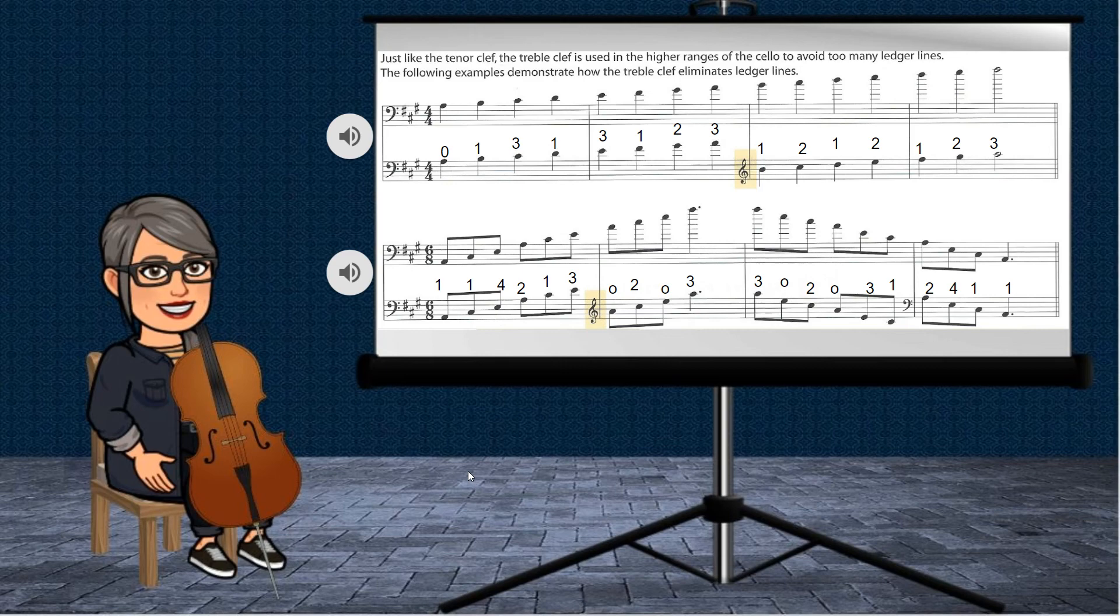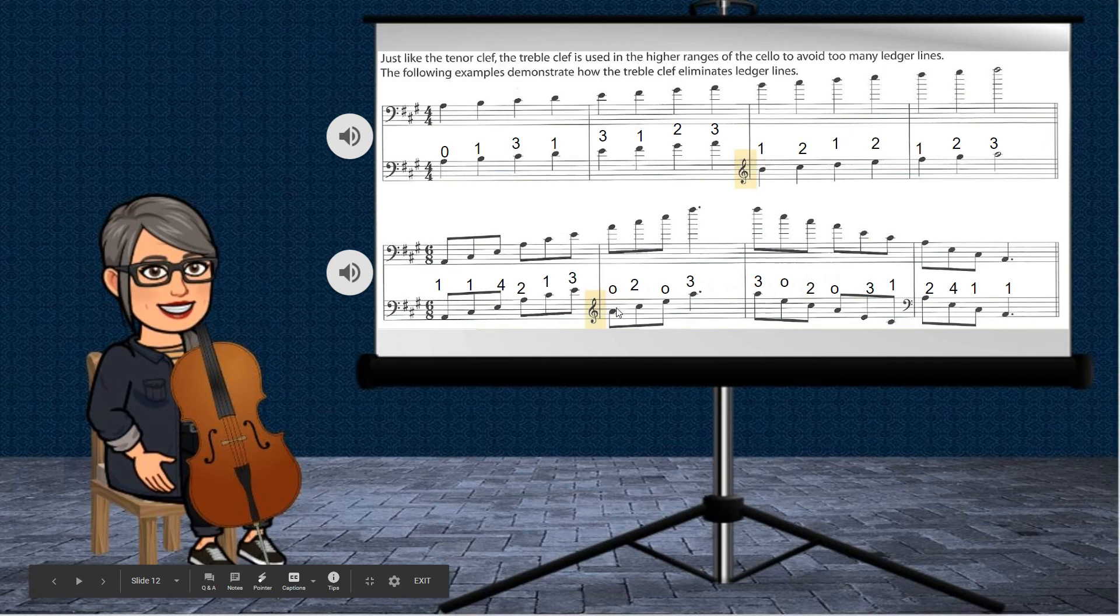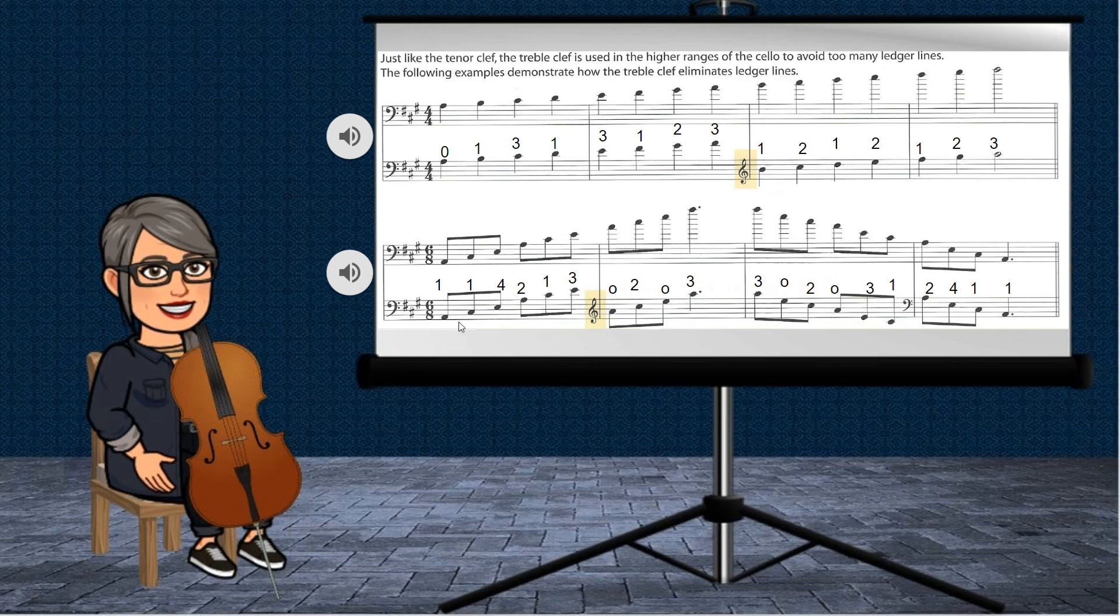Now the second example is an A major arpeggio. Here, once again, these are little O's, which are symbolic of harmonics. So make sure that you follow along and you can play this without the recording and you can take your time to make sure that you get all the notes in tune. The metronome is set at 50 beats per minute.